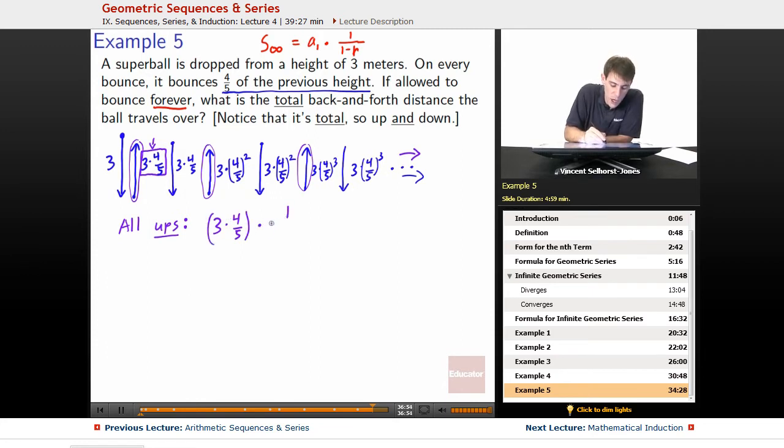And then that's going to be times 1 over 1 minus, what's the rate? 4 fifths, because it's 4 fifths on every bounce. It goes up to 4 fifths of its previous height, so the rate for the next one will be 4 fifths of that, then 4 fifths of that, then 4 fifths of that. Notice there was one other requirement on being able to use this. The absolute value of our rate must be less than 1, but since it's 4 fifths, that winds up checking out.